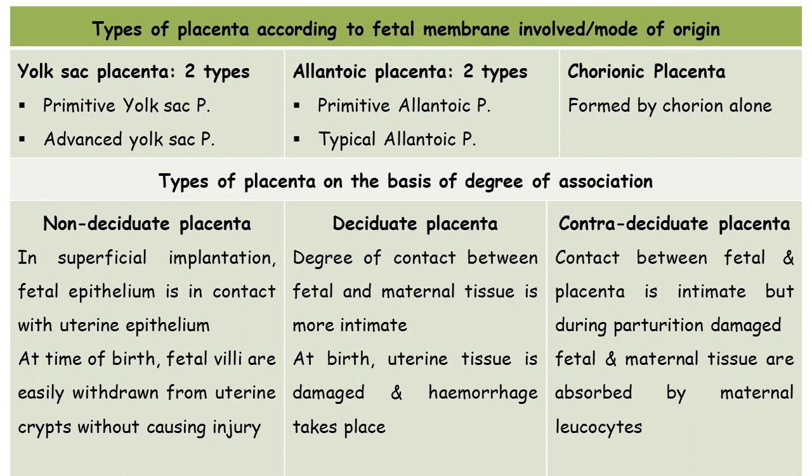The first type is yolk-sac placenta. In this case, the placenta is formed by the yolk-sac and chorion. The yolk-sac grows all around the embryo and develops vitelline blood vessels for taking material from the maternal blood. This placenta is formed of two extra-embryonic membranes: yolk-sac and chorion. It is further divided into two types: primitive yolk-sac placenta and advanced yolk-sac placenta.